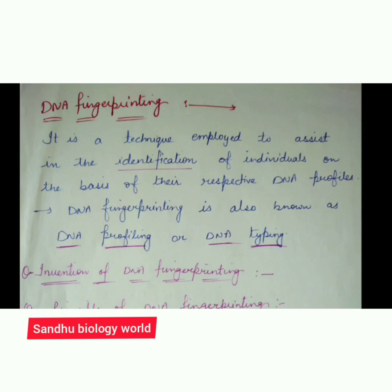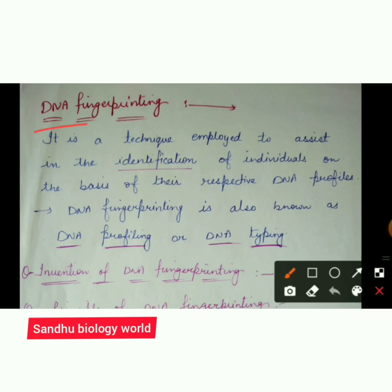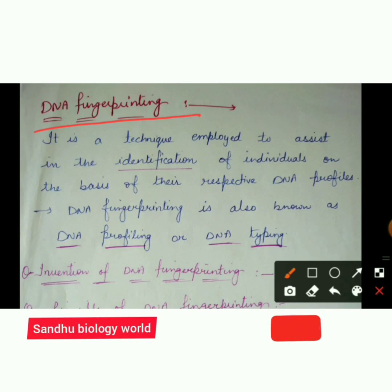Let's start with the definition of DNA fingerprinting. DNA fingerprinting means to identify any individual or person on the basis of their DNA profile. This technique is used in many cases, such as criminal cases, where we identify human beings on the basis of their DNA profile.